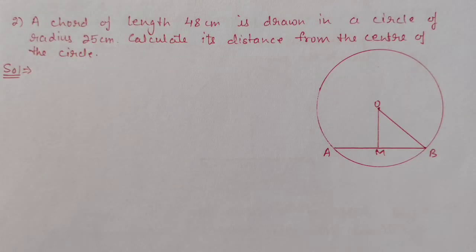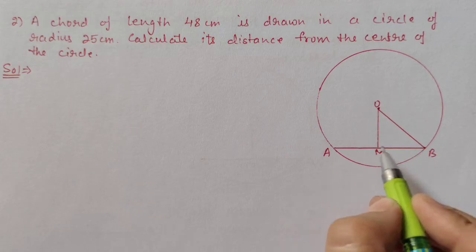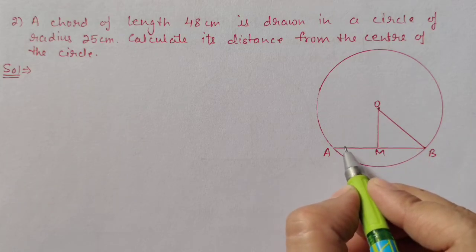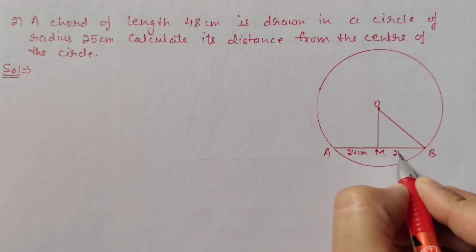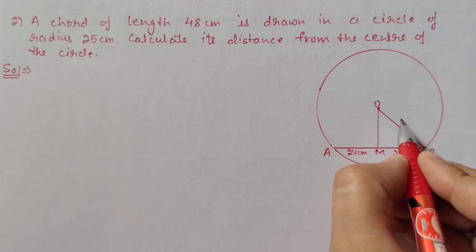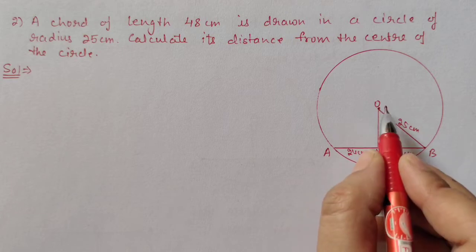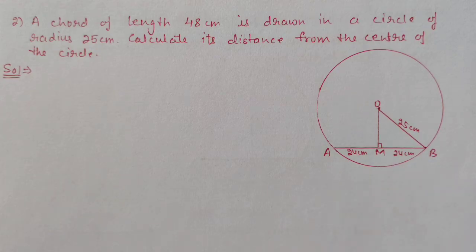Question 2: A chord of length 48 cm is drawn in a circle of radius 25 cm. Calculate its distance from the center. We draw a circle with a chord of 48 cm and drop a perpendicular from the center, which divides the chord into two equal halves of 24 cm each. The radius is 25 cm. We use the Pythagorean theorem in this right-angle triangle to find the distance from the center to the chord.